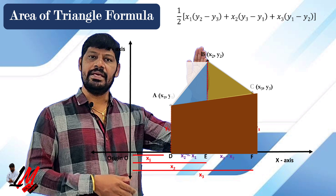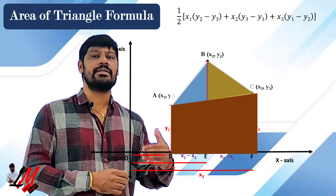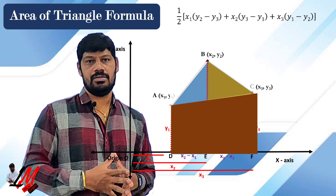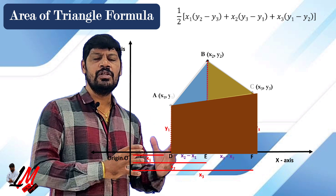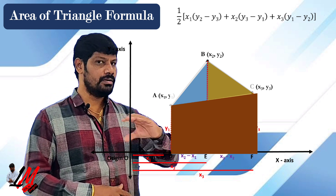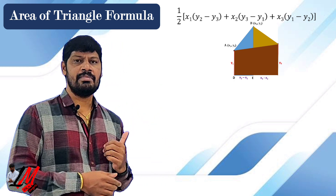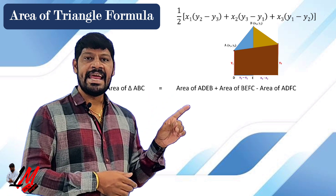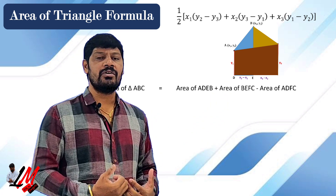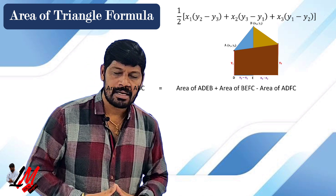So the area of triangle ABC equals: area of trapezium ADEB plus area of trapezium BEFC minus area of trapezium ADFC. The formula for area of trapezium is half into sum of parallel sides into height. For the first trapezium ADEB, AD and BE are the parallel sides, and DE is the height.